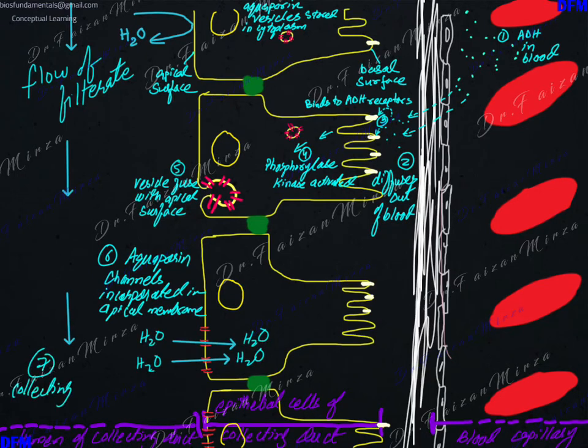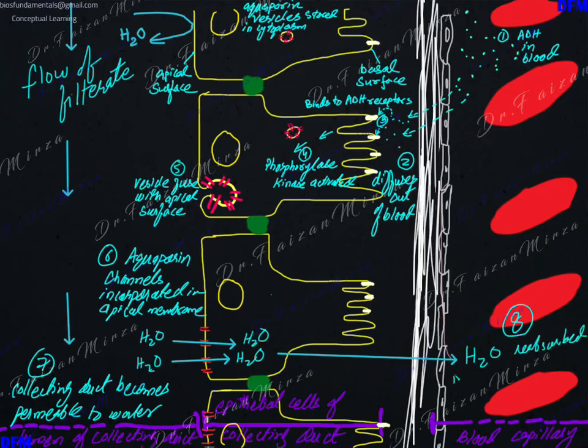Water starts to enter by osmosis, which essentially is just a diffusion of water molecules. The water molecules move from the collecting duct into the blood. The blood then takes this water away. So this is how your osmoregulation pathway works.